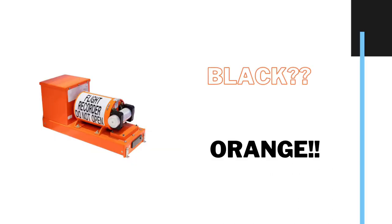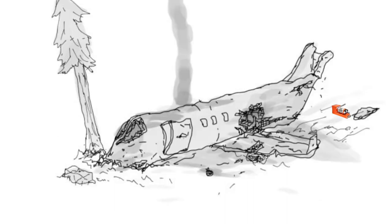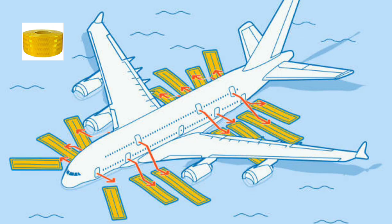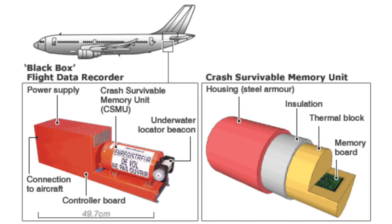These flight recorders are intentionally painted orange but are still referred to as black boxes by the public. The prime reason for painting the device orange is that it must be easily traceable in the aftermath of a plane crash. These devices are also pasted with stripes of reflective tape, which are very helpful in locating them when a plane lands over water. After recorder recovery, the crash survivable memory unit is extracted from its crash protection housing for data recovery and further investigation.